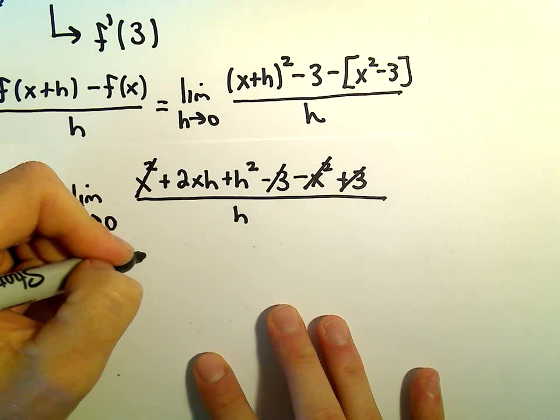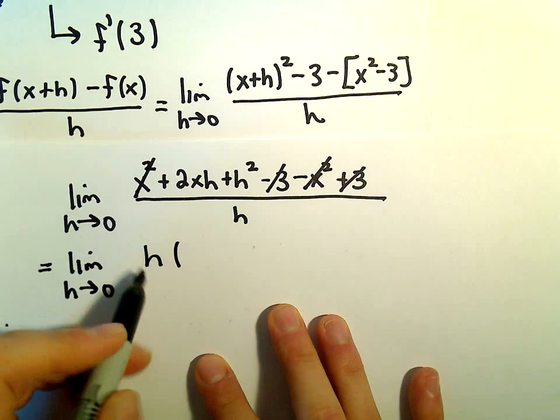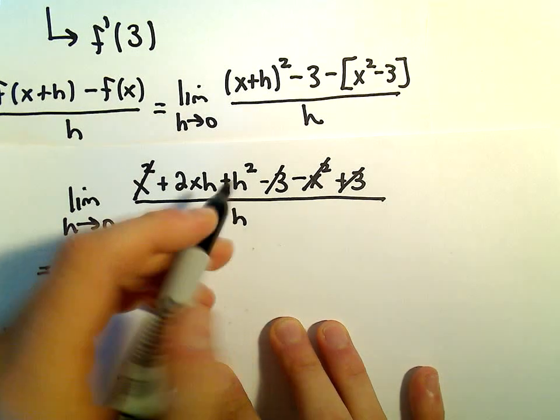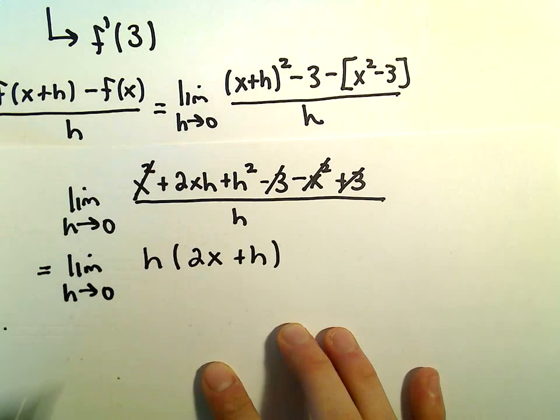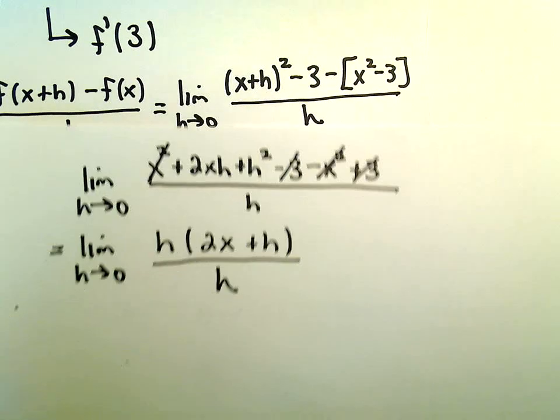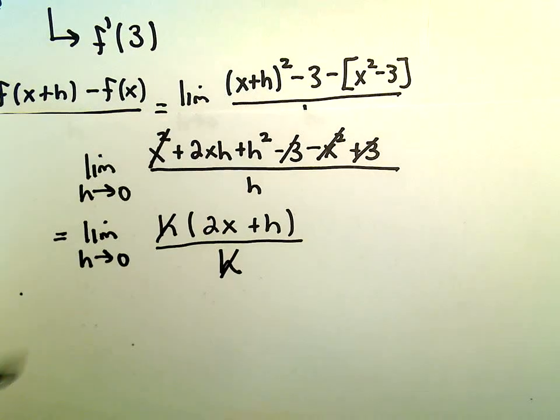We can factor h out of the numerator. h times 2x gives 2xh, and h times h gives h². We have h in the denominator, so we cancel the h's.